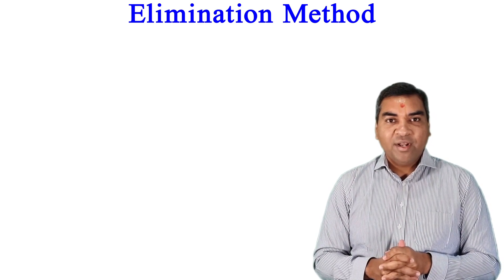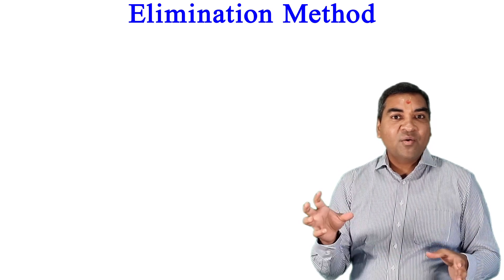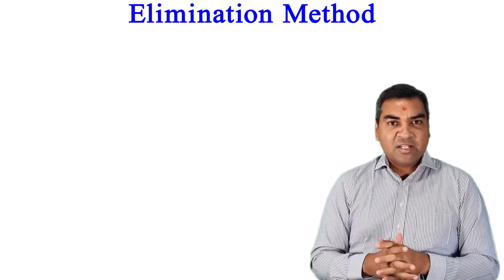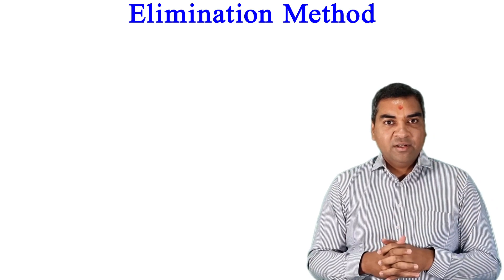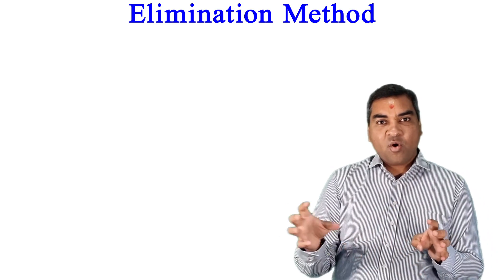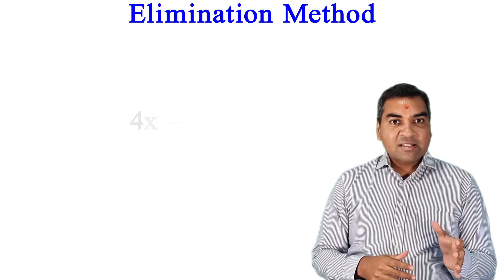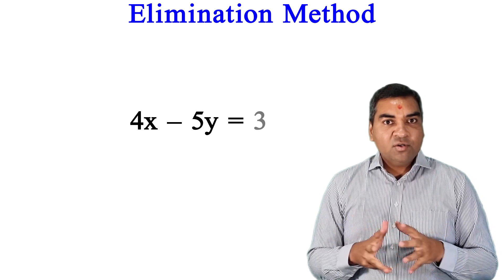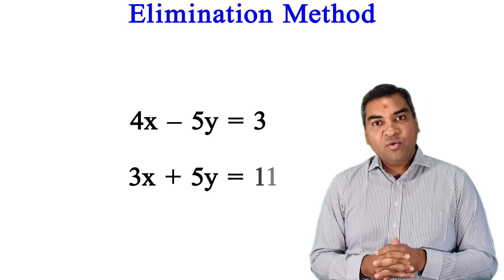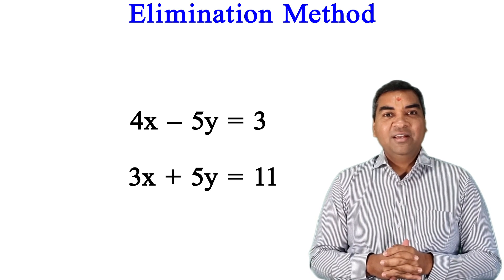I'll give you one practice question: solve by elimination method and find x and y. Your equations are 4x - 5y = 3 and 3x + 5y = 11. Get your pen and paper, work it out, and put your answers in the comments. If you have trouble, watch the video again. Thank you very much!